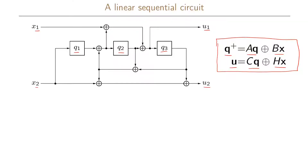Let us first identify q and q+ in the figure. Looking at the D element, the input to the D element is our next state. So we have q1+ as the input to the q1 D element, and the current state q1 is the output of that D element. Similarly, for the q2 D element, the next state is q2+ and the output is q2. For the q3 D element, the input is q3+ and the current state is q3, which is the output of that D element.